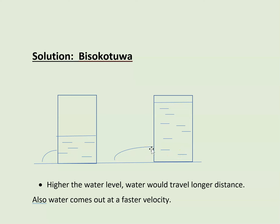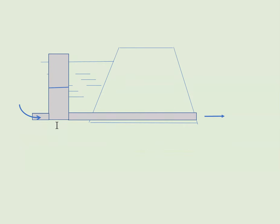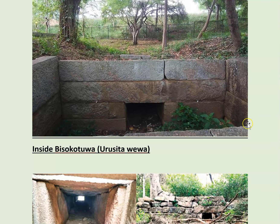To solve the pressure problem, they developed the bisokotua — a structure with gates where the water level inside can be controlled, so the pressure going out would be lower. By lifting or lowering these gates, they could manage water pressure. That was the next major step.